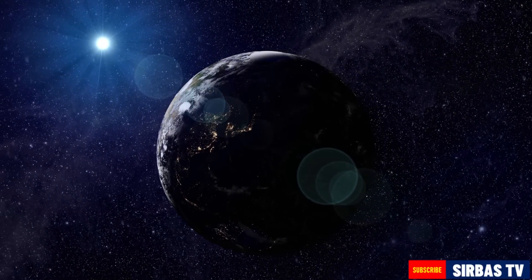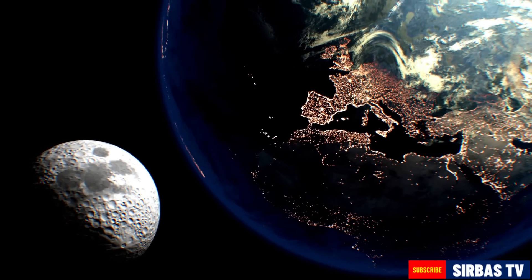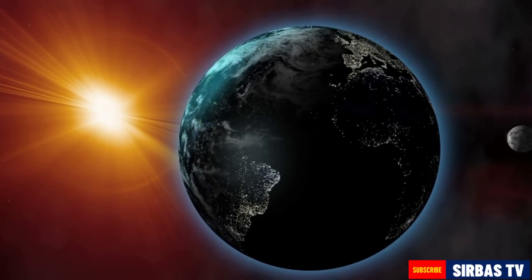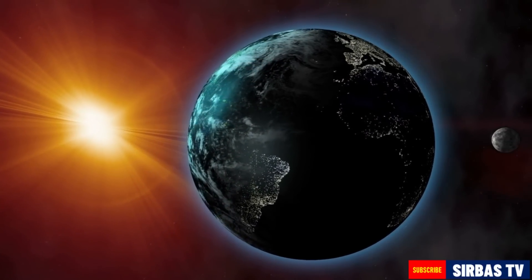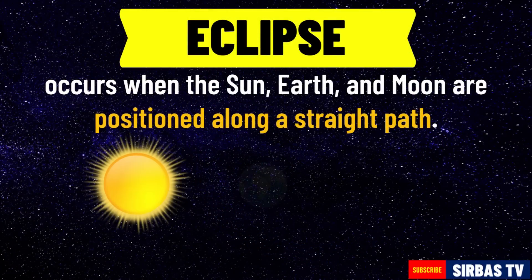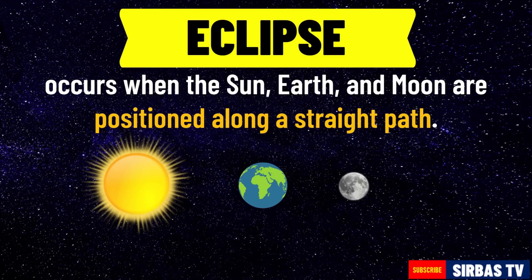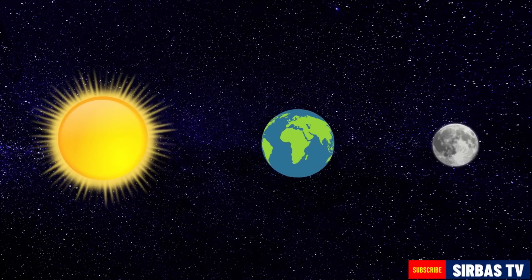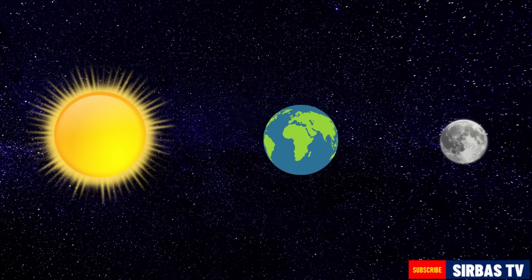The Earth is constantly moving around the Sun, and the Moon is constantly moving around the Earth. When these three celestial objects align together, an astronomical phenomenon called eclipse occurs. An eclipse occurs when the Sun, Earth, and Moon are positioned along a straight path and the shadow of either the Moon or Earth is cast on the other. The straight or nearly straight line formation of the Sun, Earth, and Moon is called syzygy. During an eclipse, an object in space blocks another object from view.